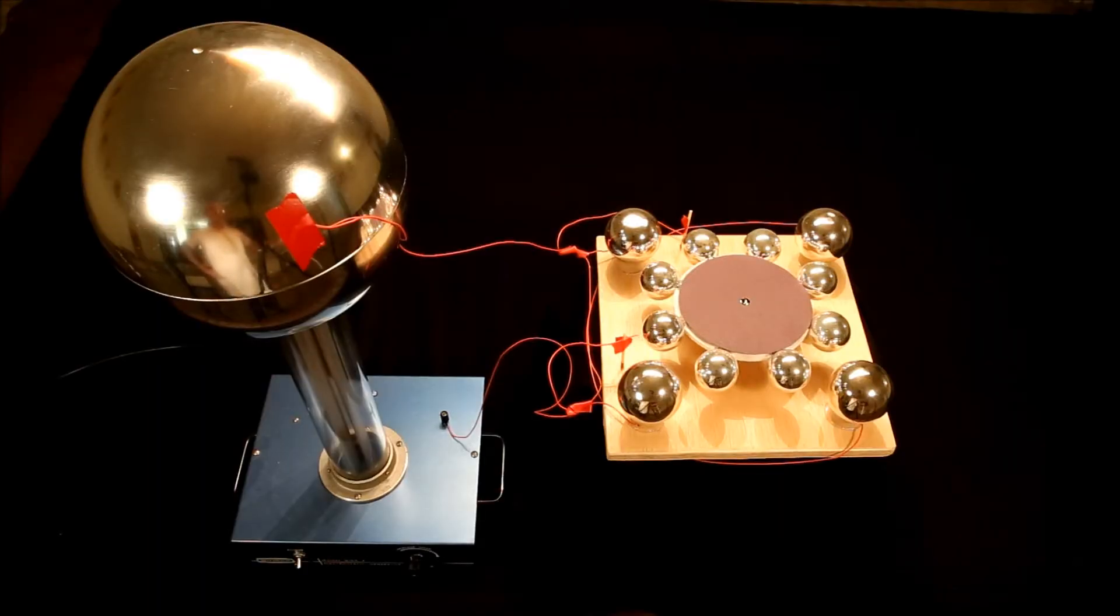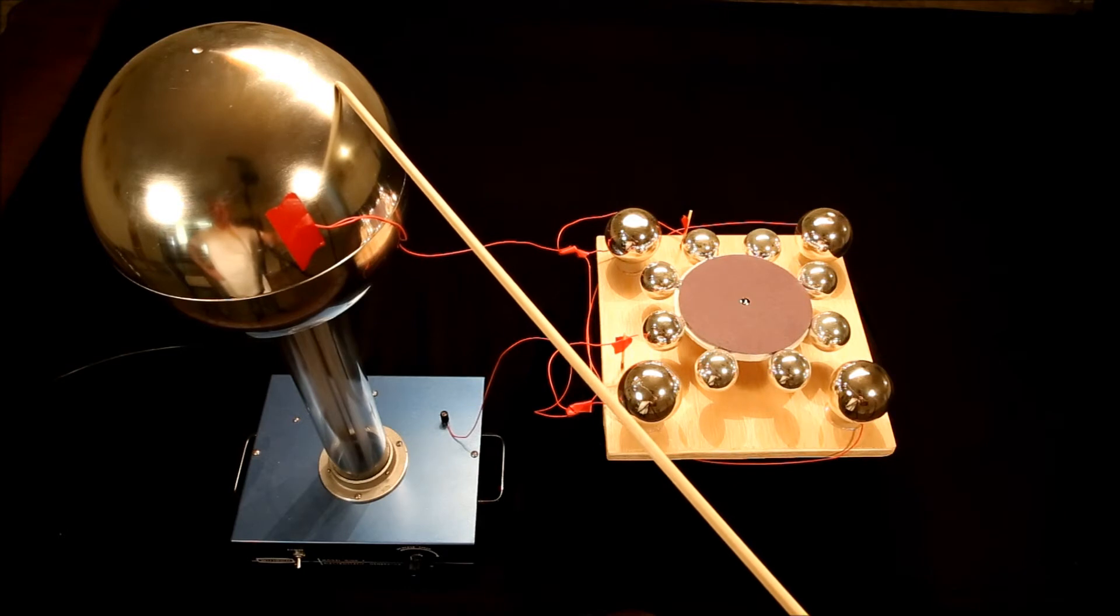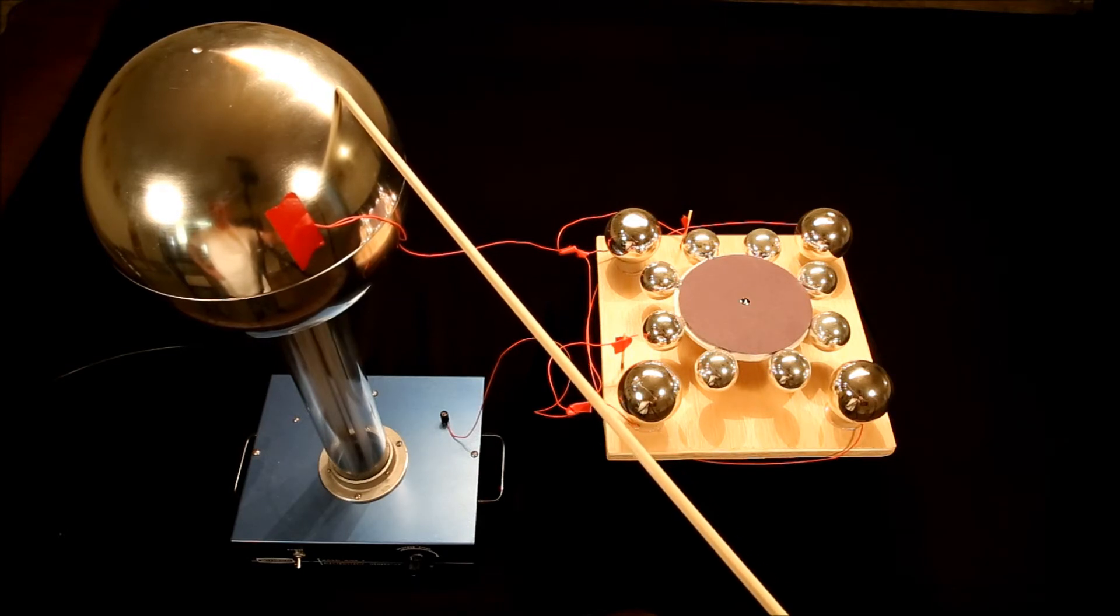This electrostatic motor is made using Christmas ornaments. How it works is that this and this sphere are connected to the negatively charged ball of the electrostatic generator.